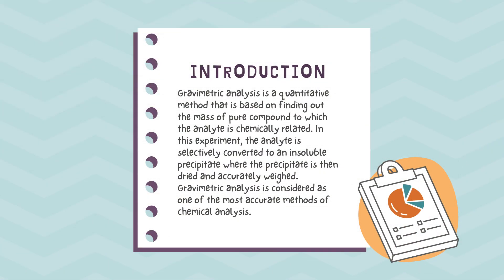What is gravimetric analysis? It is a quantitative method that is based on finding out the mass of the compound to which the analyte is chemically related. In this experiment, the analyte is selectively converted to an insoluble precipitate, where the precipitate is then dried and accurately weighed. Gravimetric analysis is considered as one of the most accurate methods of chemical analysis.